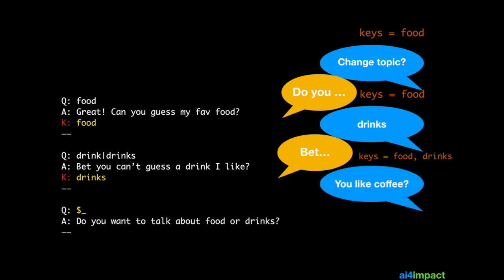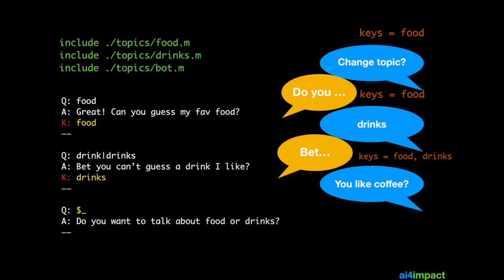Now if the user asks 'do you like coffee?' you might think that because coffee is one of the drinks in the drinks topic, the bot would say 'I like coffee'. But that is not the case. If you look carefully, the food topic comes before drinks. This means the rules in food will match before the rules in drinks are matched, so it matches 'like coffee' in food and the bot responds with 'I am sure', which is not what the user expects.